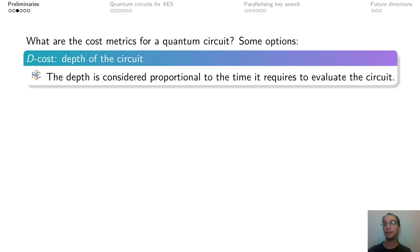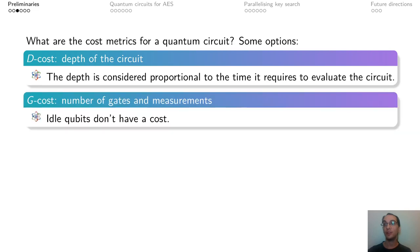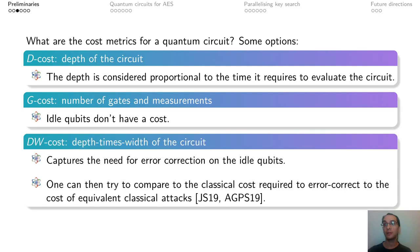The idea here is that each gate in a circuit takes some amount of time to be executed. Hence, the depth in terms of gates would be proportional to the time it takes to evaluate it. Another metric is G-cost or the total number of gates in the circuit. This means that if a particular qubit is idle at some point it will not have a cost.